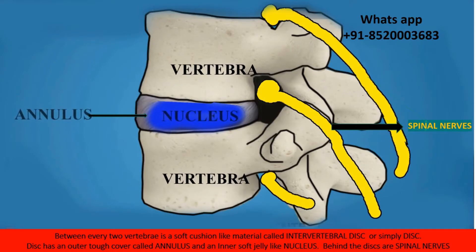The disc has two components: an outer covering called the annulus, and an inner soft jelly-like material called the nucleus. Behind the discs are our spinal nerves, which supply the legs.